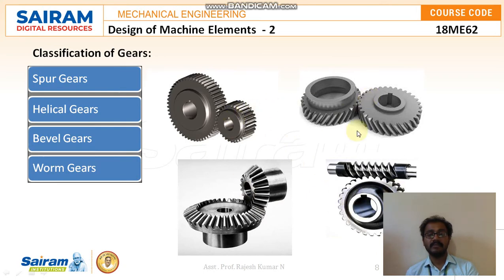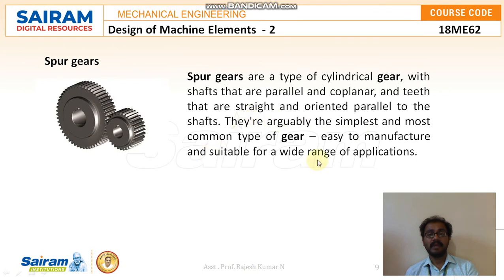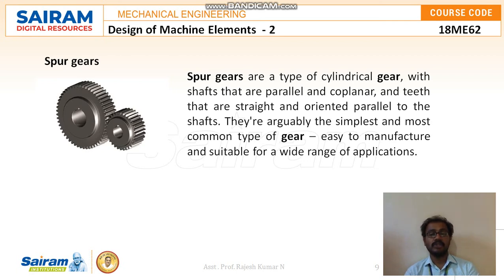Spur gears are a type of cylindrical gear with shafts that are parallel and co-planar, and teeth that are straight and oriented parallel to the shafts. They are arguably the simplest and most common type of gear, easy to manufacture, and suitable for a wide range of applications.